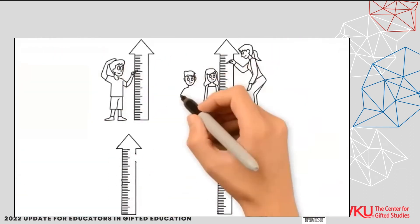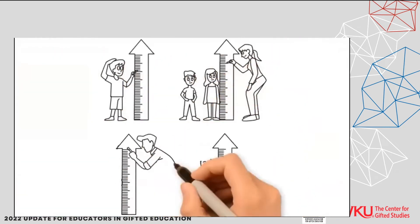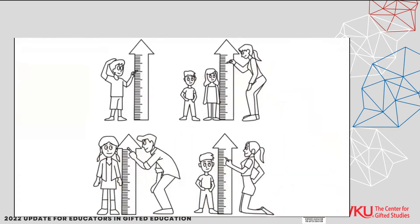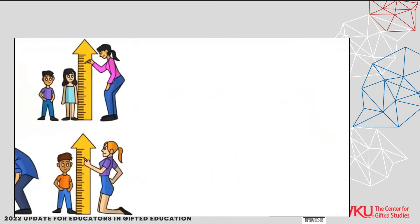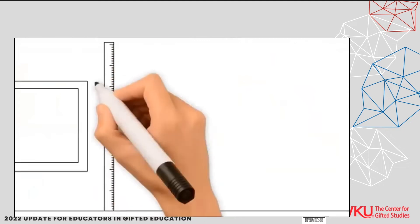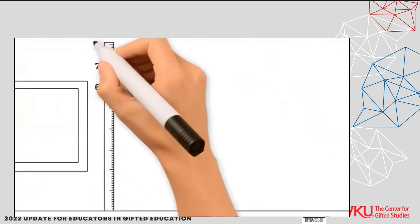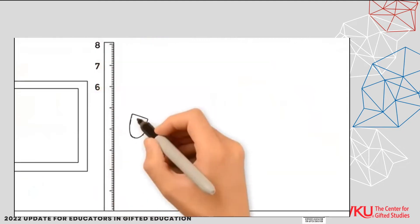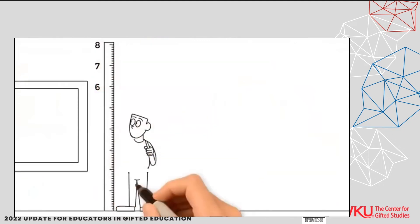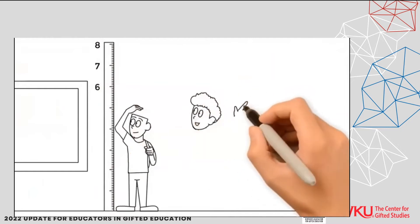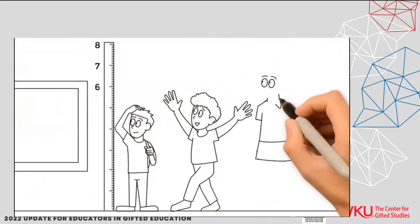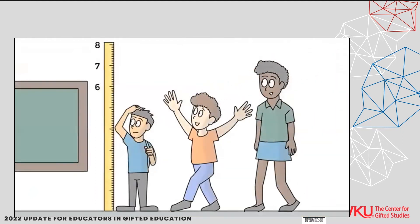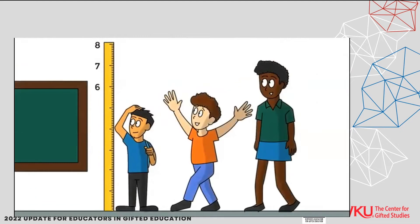Even within one classroom, we might find that our ruler cannot measure every child accurately. However, if the ruler could expand to six feet, seven feet, or even greater, we can measure each child's height precisely. Above-level testing can provide this type of accurate information for a student's academic ability level.